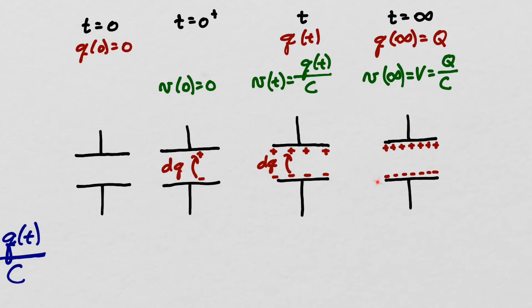The energy stored on a capacitor depends on how much charge is on that capacitor and not on how that charge got there. To understand the energy stored, we're going to think of the capacitor being charged by flow of charge inside the capacitor rather than around the circuit. At T equals zero there's no charge, so when we move the first charge dq from the lower plate to the upper plate, it takes no work because there's no electric field inside the capacitor. To move the next dq will take some work because there's now an electric field inside the capacitor and we're pushing dq against that electric field. The voltage across the capacitor is the amount of work to move one coulomb of charge from the lower plate to the upper plate.